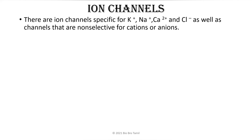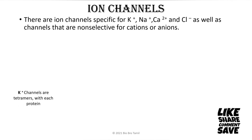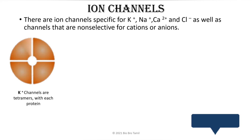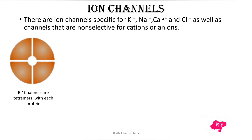Let's talk about the structural details. First, the potassium channel is a tetramer form — there are 4 proteins in a channel. If you look at this image, we have 4 proteins, each occupying a quarter of a circle, forming our channel. This is how potassium transformation occurs across the cell membrane.